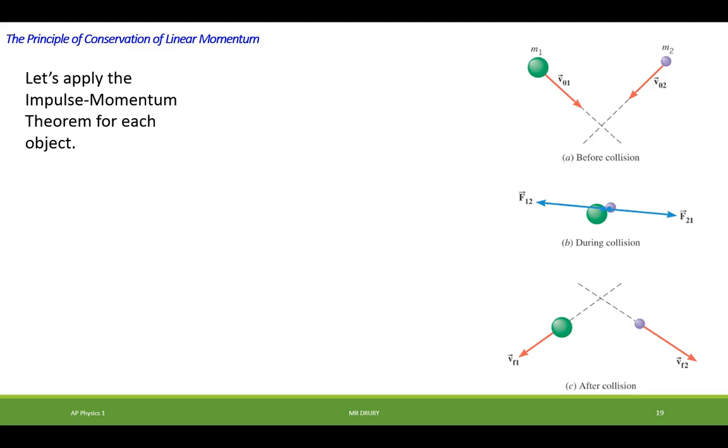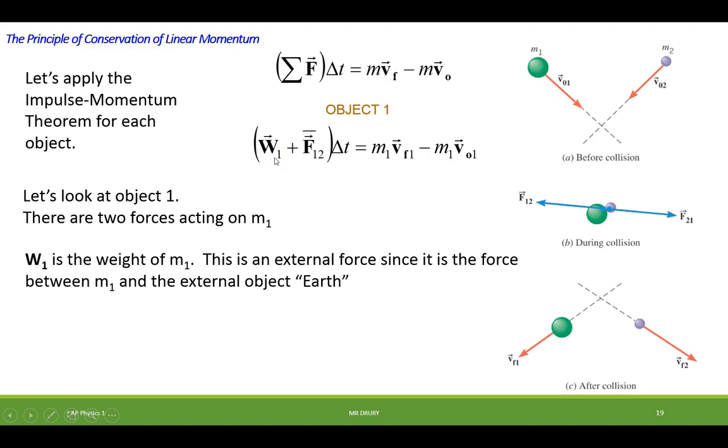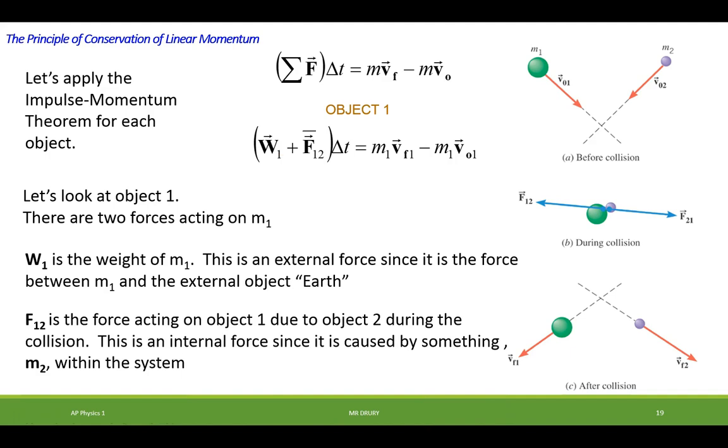Let's apply the impulse momentum theorem to each of the objects. First we'll look at object 1. There's two forces acting on object 1. There's a weight of object 1. This is external force because it's caused by the earth. And then we have an internal force, F1,2. This is the force of object 2 acting on object 1. And this is an internal force because we're considering the system to be M1 and M2. So this is a force between the two objects.